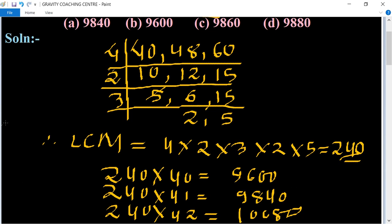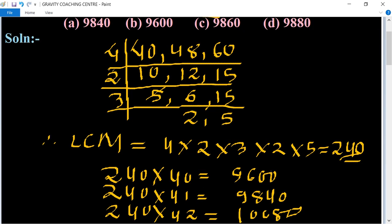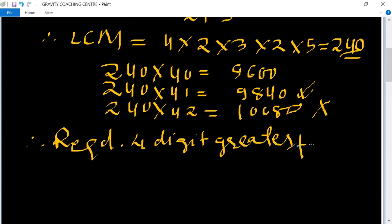We need to find the greatest number of 4 digits, so this one is not a 4-digit number. So greatest 4-digit number equals 9840, which is the required answer. Therefore, the required 4-digit greatest number is 9840.